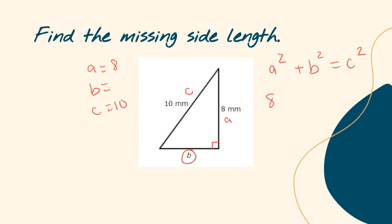If A is 8, that would be 8 squared, plus I do not know what B is, so I leave it as B squared, and C is 10, so I have 10 squared. Now I simplify: 8 squared is 8 times 8, which equals 64, plus B squared, and 10 squared is 10 times 10, which is 100.